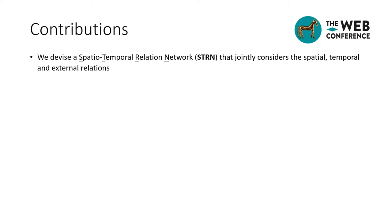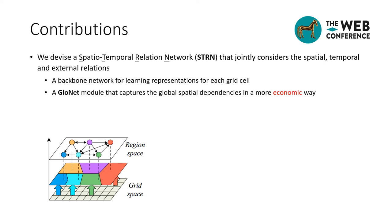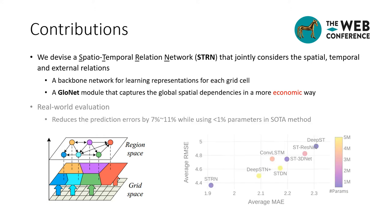To address this issue, we devised a spatial temporal relation network that jointly considers spatial, temporal, and external relations. We stratified the whole process into two components: the first is a backbone network for learning representation for each grid cell, and the second is a global relation module that captures global spatial dependencies in a more economical way compared to existing methods. Our extensive experiments show that our approach reduces prediction errors by 7% to 11% while using less than 1% of the parameters of the SOTA method.